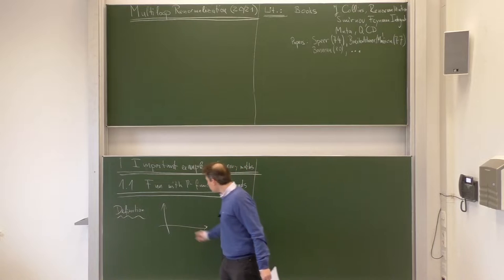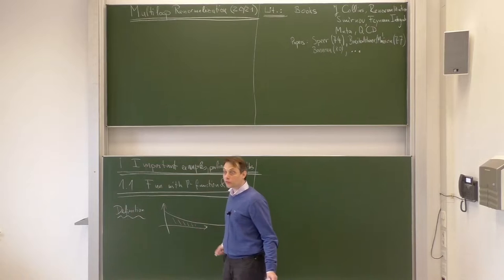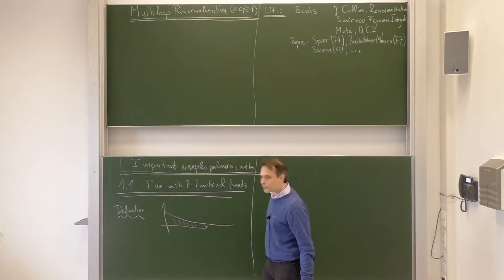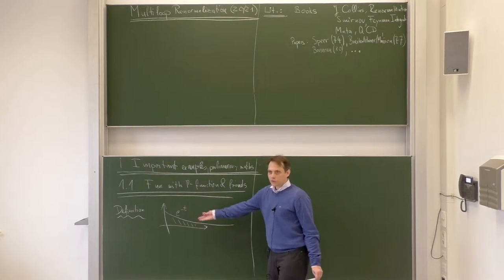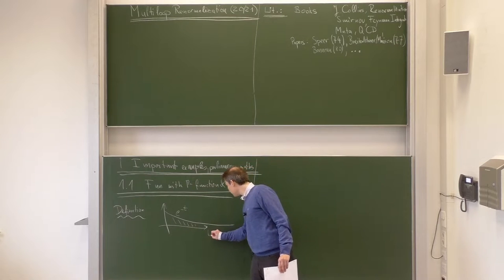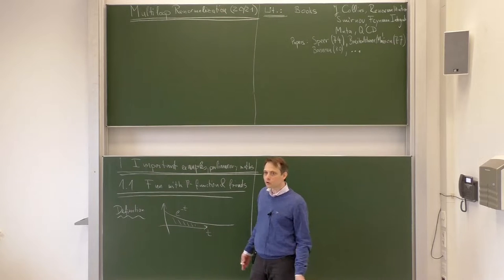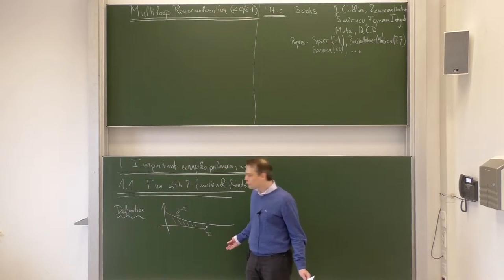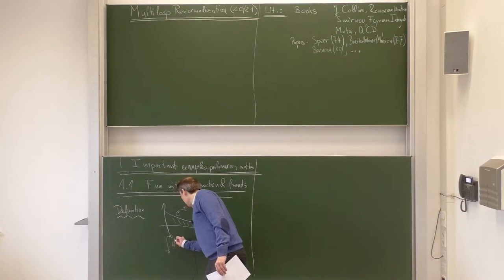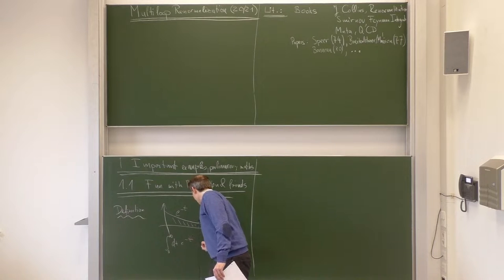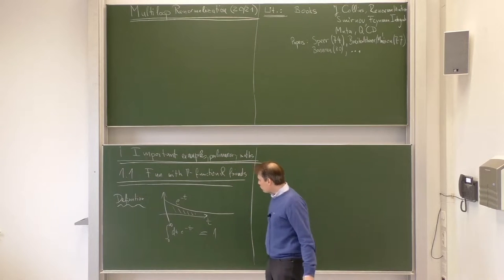Let's have a look at this integral. Everybody these days is talking about exponential functions — it's a very hot topic. So let's look at e to the minus t. What is the area under the curve? It's one. So the integral from zero to infinity of dt times e to the minus t equals 1 — exponential decay.